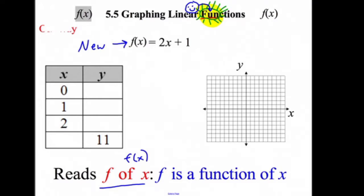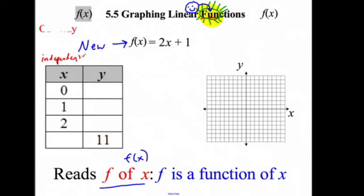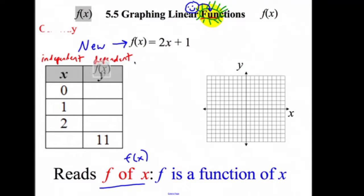Let's just switch to the new way. Why are we doing this? This is going to help us out in applications. If f is a function of x, what we're saying is x is causing things to happen. x is what we call our independent variable — it's independent of y. y has been the dependent variable, dependent on x. x causes y to change. So instead of saying x causes y to change, we're going to say f is a function of x.